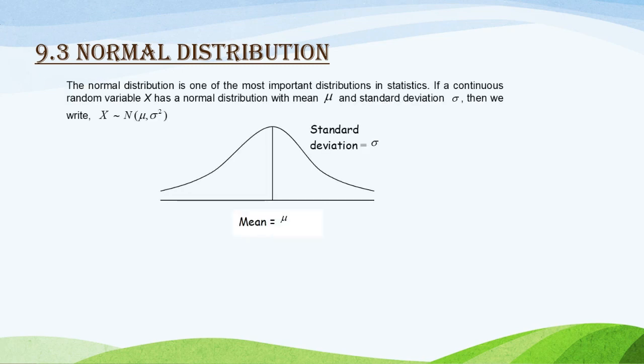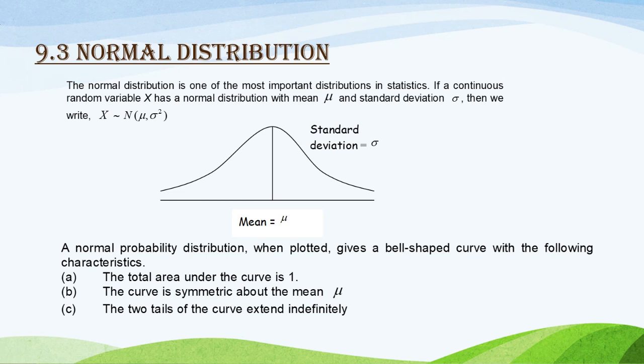Normal distribution is one of the most important distributions in statistics. If a continuous random variable X has a normal distribution with mean and standard deviation, then we write X ~ N(mean, variance). When plotted, this gives a bell-shaped curve. The total area under the curve is 1, the curve is symmetric about the mean, and the two tails of the curve extend indefinitely.